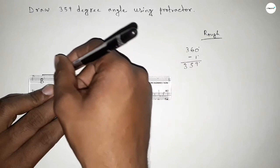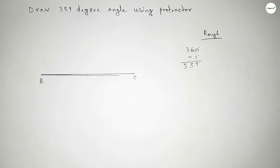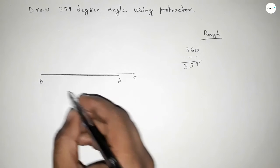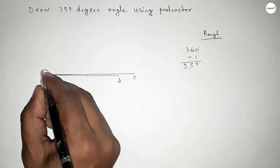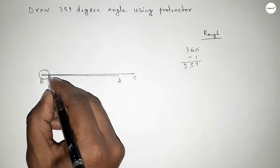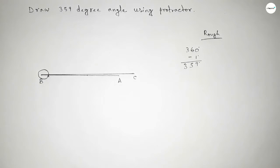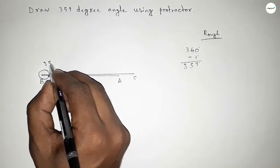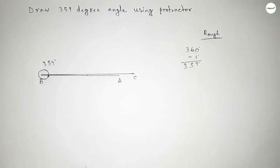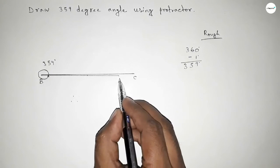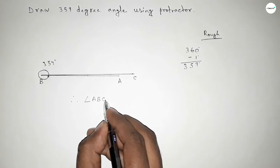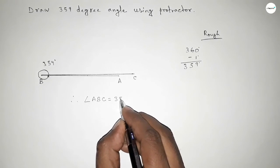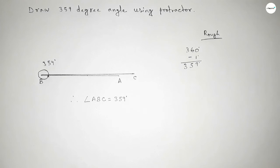If you subtract one degree from 360, here taking a point, angle ABC. From starting here up to this, angle ABC equals 359 degrees. Therefore, angle ABC equals 359 degrees. That's all, thanks for watching.